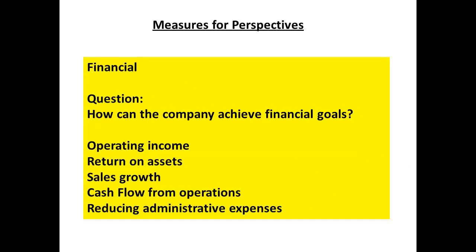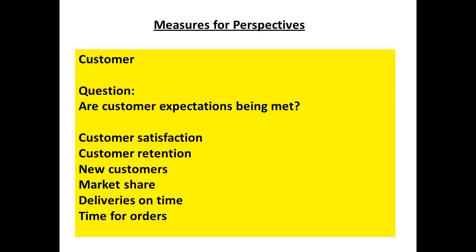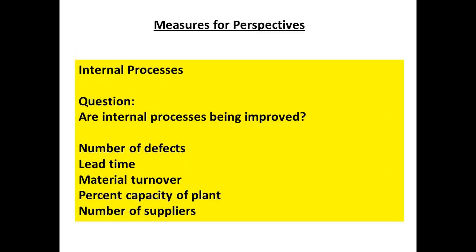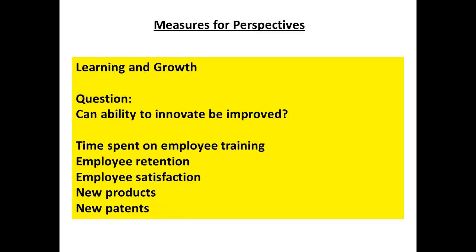What exactly do we mean by these perspectives? The financial goals may include income, return on assets, growth in sales, improving cash flow, and reducing expenses. Customer goals include improved satisfaction, retention, obtaining new custom, improving market share, and delivering goods on time. Internal processes can include reducing the number of defects, operating plant to a higher capacity, and looking at materials turnover. Learning and growth relates to training, keeping employees, and the development of new products. Can the company take steps to improve and innovate?